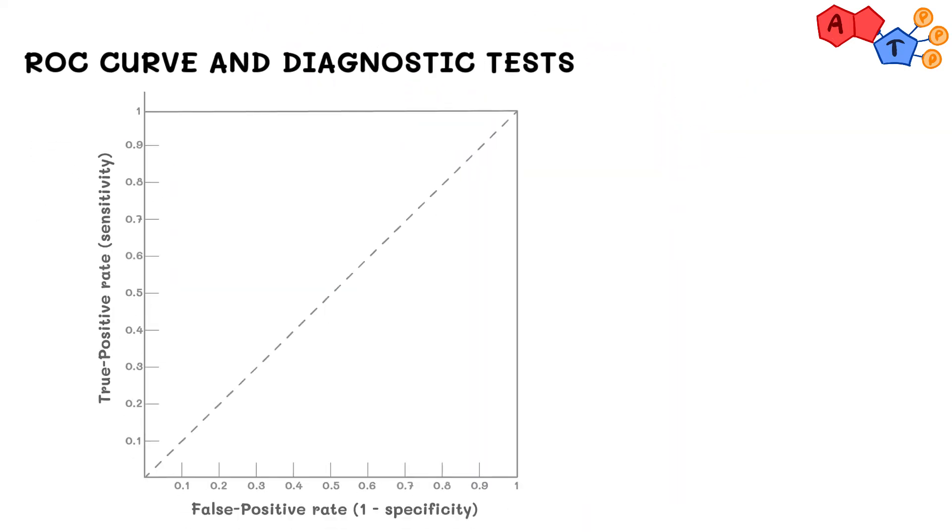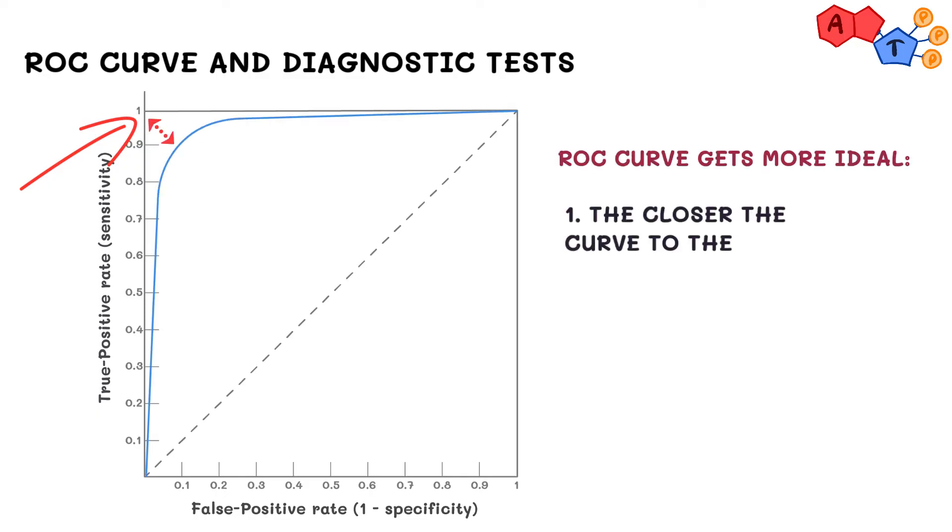When it comes to comparing two different tests, eyeballing the ROC curves becomes very, very handy. Since the top left corner suggests an ideal test, we want curves to be closer to that corner.